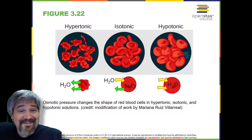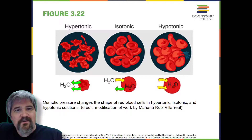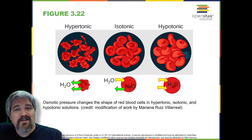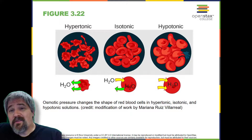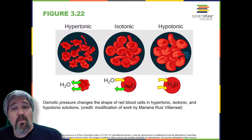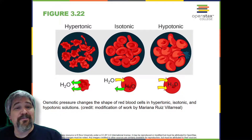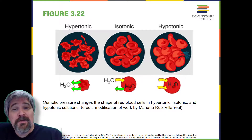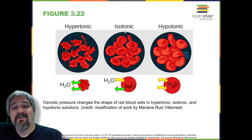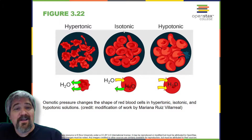A question comes with this figure: a doctor injects a patient with what the doctor thinks is an isotonic saline solution. The patient dies, and autopsy reveals that many red blood cells have been destroyed. Do you think the solution the doctor injected was really isotonic? Some organisms, such as plants, fungi, bacteria, and some protists, have cell walls that surround the plasma membrane and prevent cell lysis. The plasma membrane can only expand to the limit of the cell wall, so the cell will not lyse. In fact, the cytoplasm in plants is always slightly hypertonic compared to the cellular environment, and water will always enter a cell if water is available.